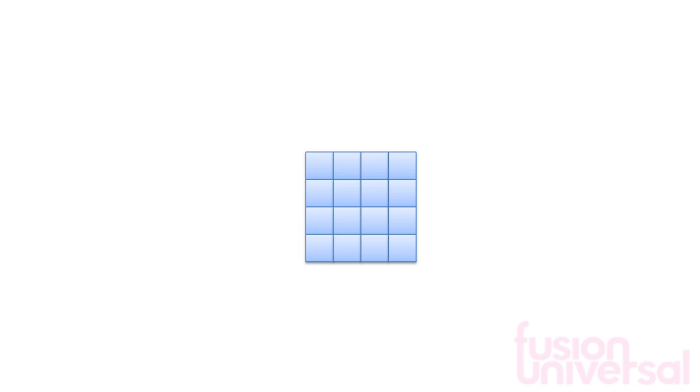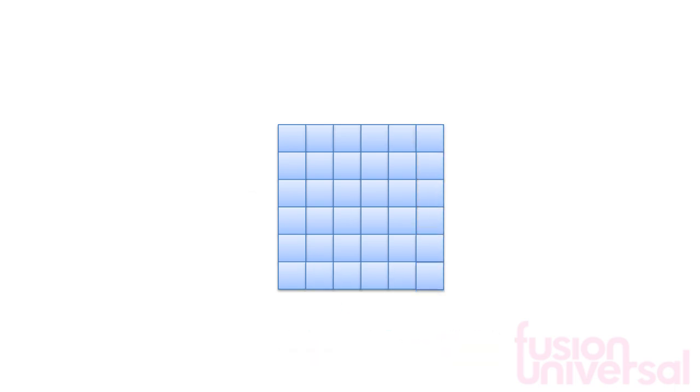As this continues, we find that five times five equals twenty-five, six times six equals thirty-six, and seven times seven equals forty-nine.